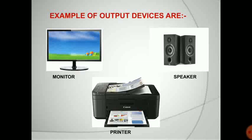Through keyboard you are inputting the data; whatever you type through keyboard, the monitor gives out the result — that's why monitor is an output device. Printer: you are printing something out — that's why printer is an output device. Speaker: it gives out sound — sound is coming outside — so speaker is an output device.